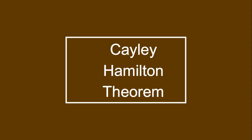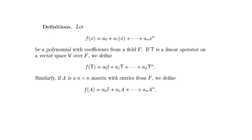Hello everyone, today let's discuss the Cayley-Hamilton theorem. First, let us define this. Whenever you have a polynomial f(x) equal to a₀ plus a₁x plus so on till aₙxⁿ, with coefficients aᵢ from field F, and if T is a linear operator on a vector space V over F, then f of that operator T is a₀I plus a₁T plus so on till aₙTⁿ. Similarly, if A is any n×n matrix with entries from field F, then f(A) is a₀I plus a₁A plus so on till aₙAⁿ.